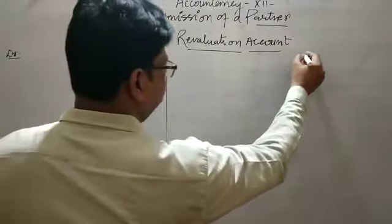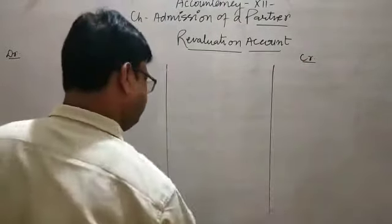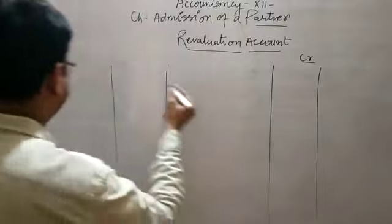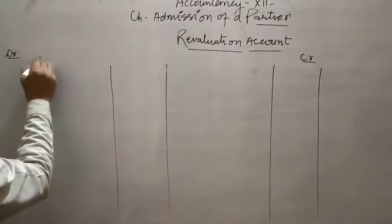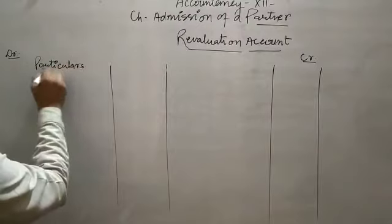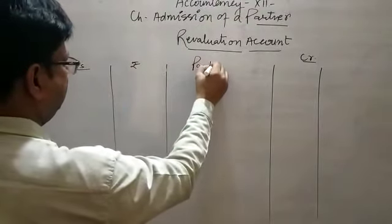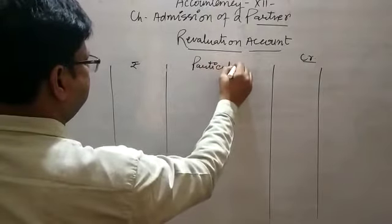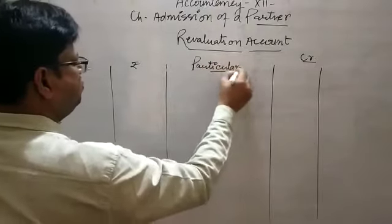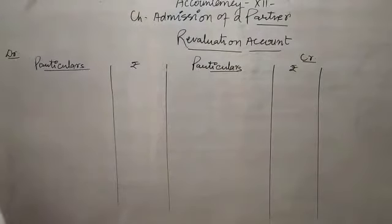The right-hand side is the credit side. Particulars form the first and second columns. The date column is not required.